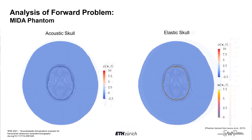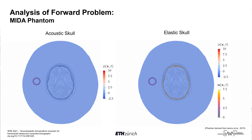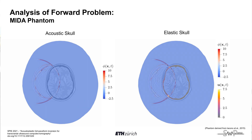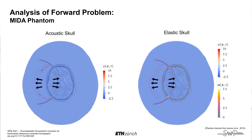We can do the same thing for a more realistic brain phantom, again considering an acoustic skull on the left and an elastic skull on the right. Overall we get pretty similar results to the previous case — relatively similar primary transmitted and reflected wavefronts between the two cases, while our secondary arrivals are again quite a bit stronger in the case where we consider an elastic skull.